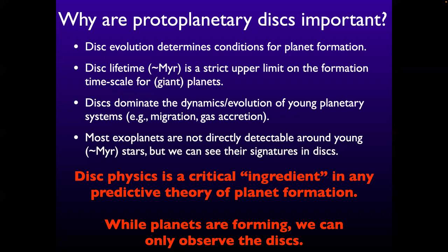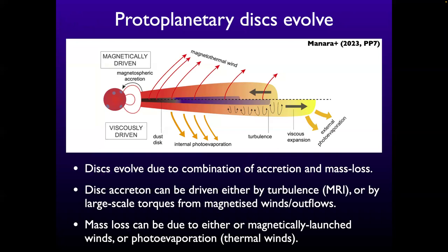Protoplanetary disks are not static. We know from observations that they live for a few million years — in 1 million year old clusters all the stars have disks; in 10 million year old clusters only a few percent do. We observe accretion — material falling onto the star — and we can measure the accretion luminosity directly. The rate of accretion is high enough to drive significant evolution on megayear timescales. If you do disk mass over accretion rate to get a timescale, you get a few million years for most sources. The question is then: why do disks accrete?